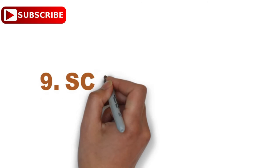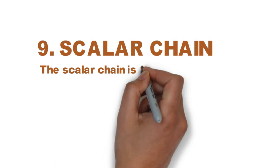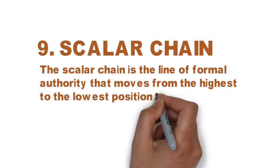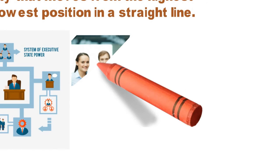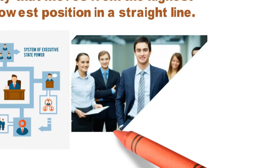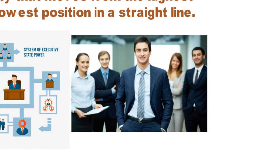Principle number nine: Scalar Chain. The scalar chain is the line of formal authority that moves from the highest to the lowest position in a straight line. The chain specifies the routes by which information should be communicated to the desired location or person. For example, if the company's CEO needs to reduce the number of employees, this news is conveyed to a manager, then to an employee supervisor, and then to the employee who will be let go.